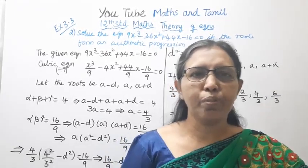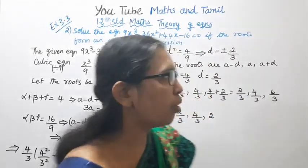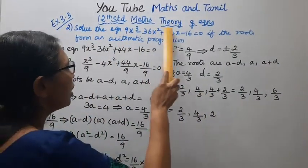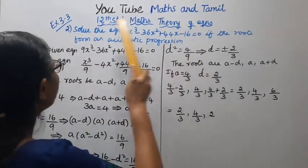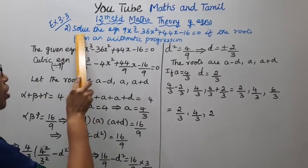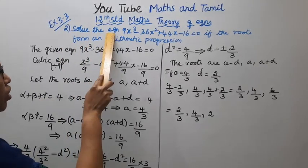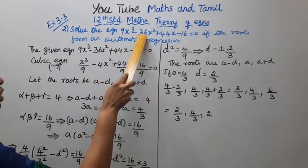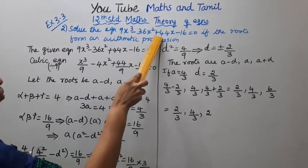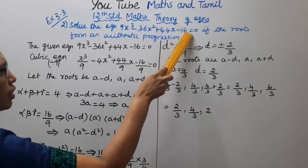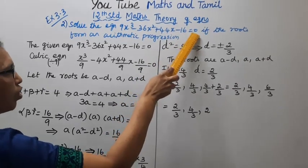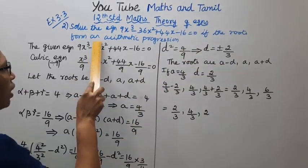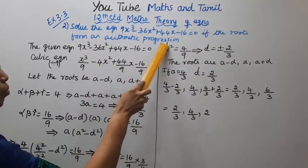Hello students, welcome to Max and Tramble channel. 12th standard Math, Theory of Equations, Exercise 3.3: Solve the equation 9x³ minus 36x² plus 44x minus 16 equal to 0, if the roots form an arithmetic progression.